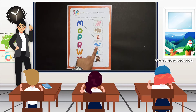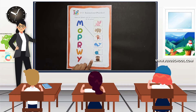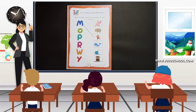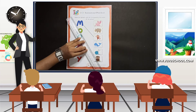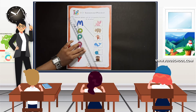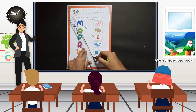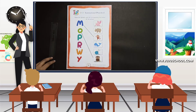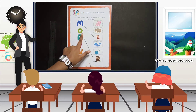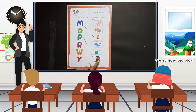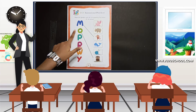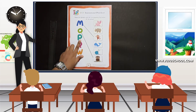Next we move on to letter O. Is it yarn? No. Is it owl? Yes! Now again take your scale and your pencil, place it directly and make a straight line from O to owl. O for owl — owl starts from the letter O.